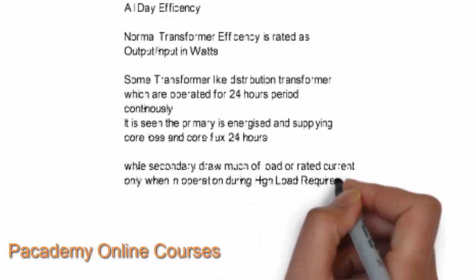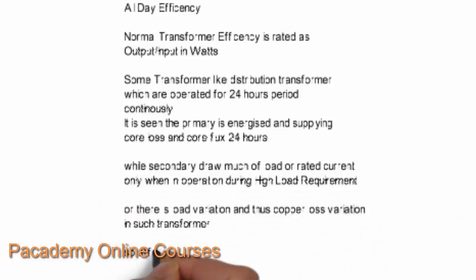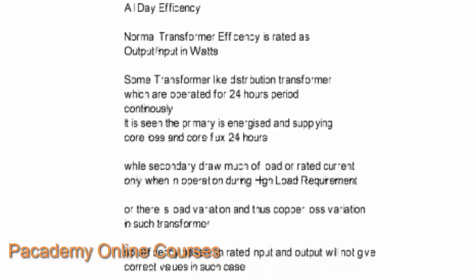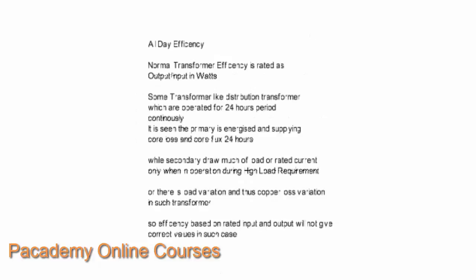Another term is all-day efficiency. Normal transformer efficiency is rated as output divided by input. But for some transformers like distribution transformers, which are operated continuously for 24 hours, the primary is excited for 24 hours and incurs core losses, while the secondary is highly loaded only during peak load times and very lightly loaded otherwise. There will be a variation in copper losses over the 24-hour period, so the standard efficiency method will not give a very accurate result.